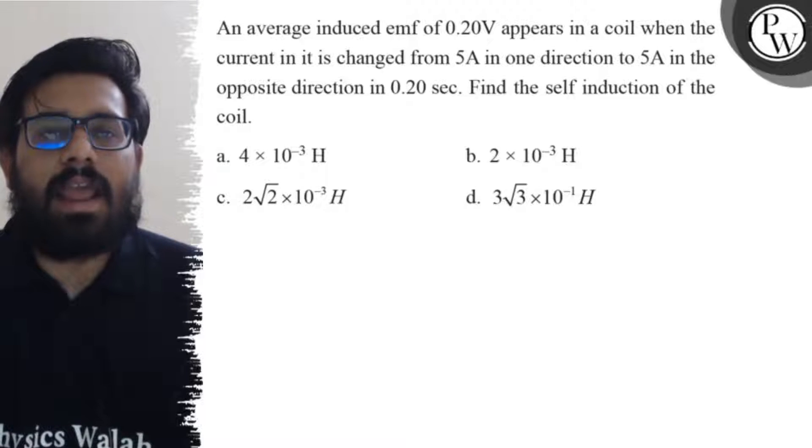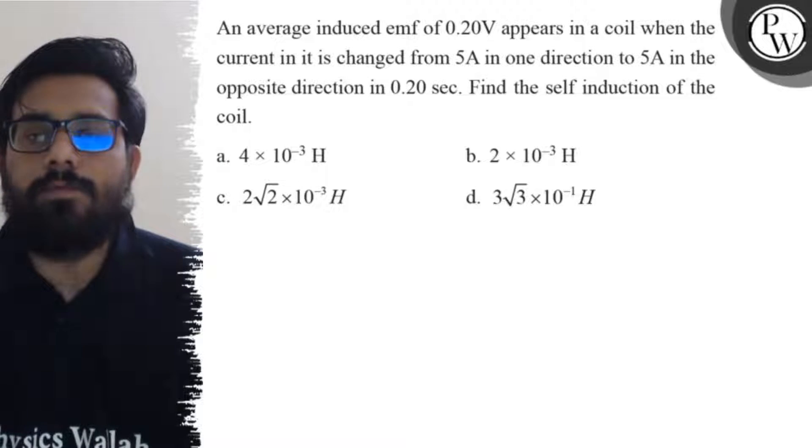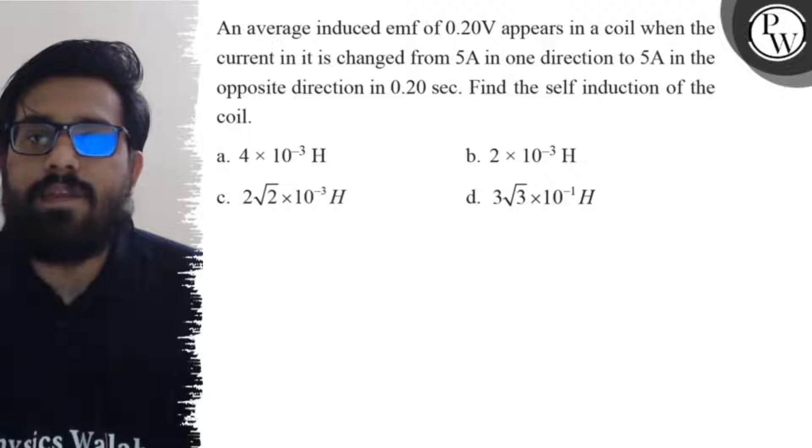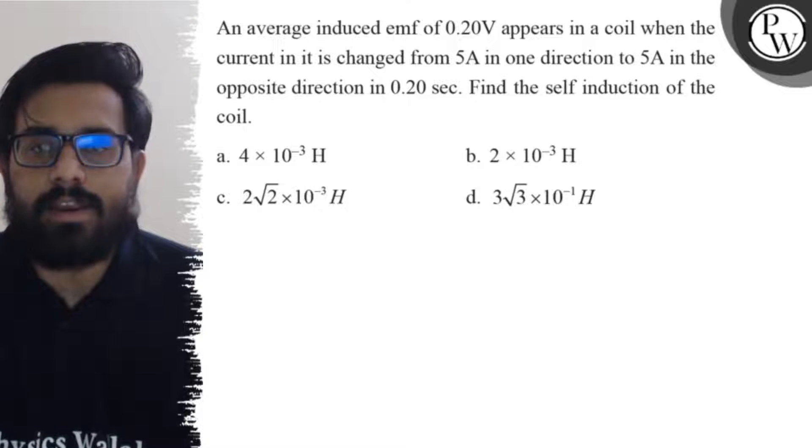Hello bachos. So let's see the question. An average induced EMF of 0.20 volt appears in a coil when the current in it is changed from 5 ampere in one direction to 5 ampere in the opposite direction in 0.20 seconds. Find the self inductance of the coil.